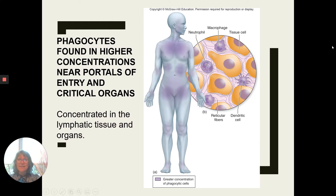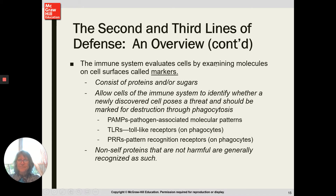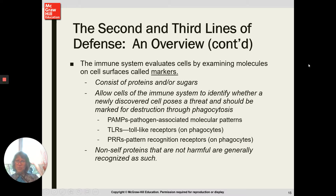Phagocytes are found in highest concentrations near portals of entry — nose, mouth — and around vital organs like the brain, heart, and lungs, as well as in the spleen where blood is cleaned. Our immune system looks for markers on cell surfaces: these markers, usually proteins or glycoproteins, tell the immune cells whether a cell belongs or does not belong.